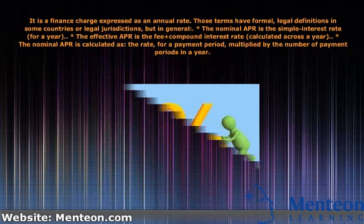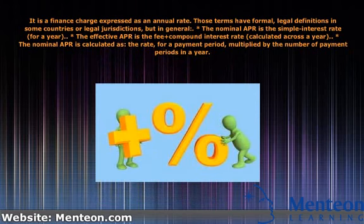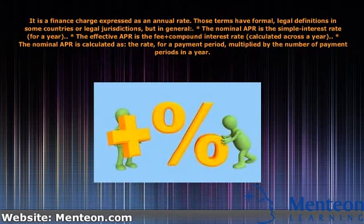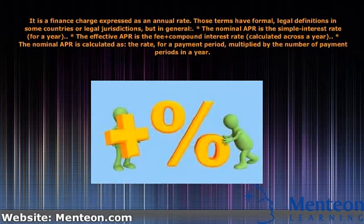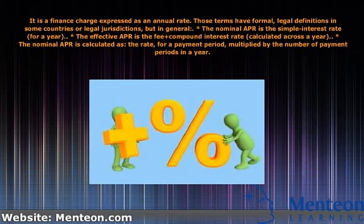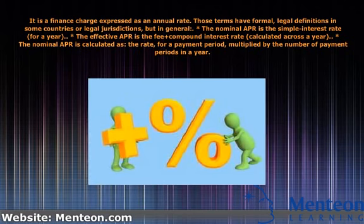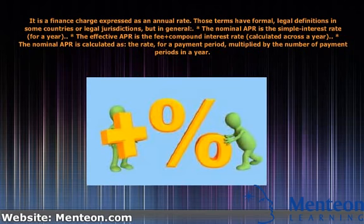Those terms have formal, legal definitions in some countries or legal jurisdictions, but in general, the nominal APR is the simple interest rate for a year, and the effective APR is the fee plus compound interest rate.